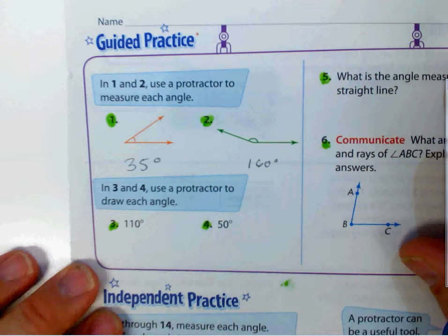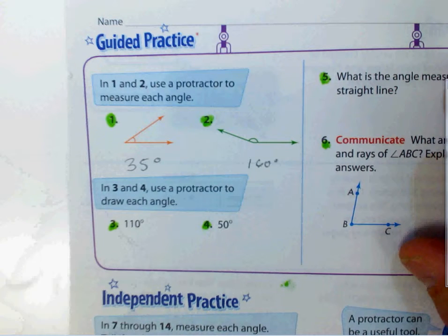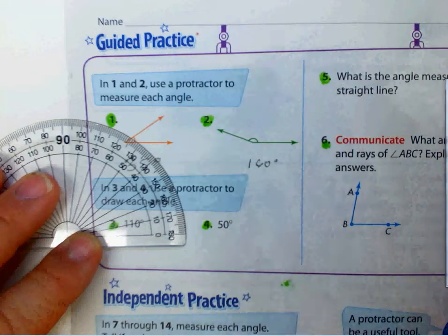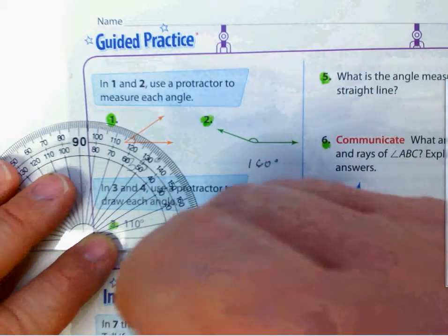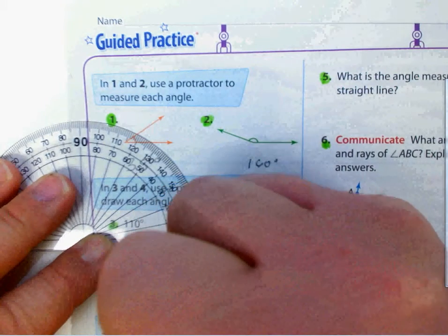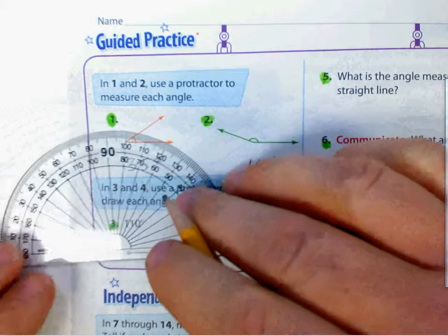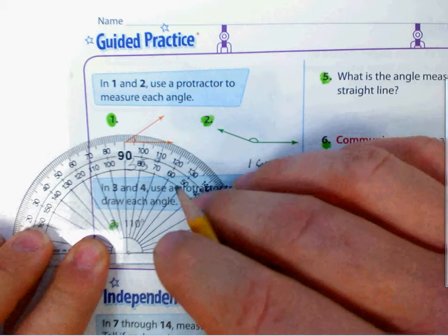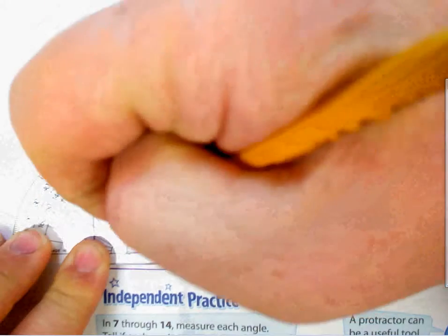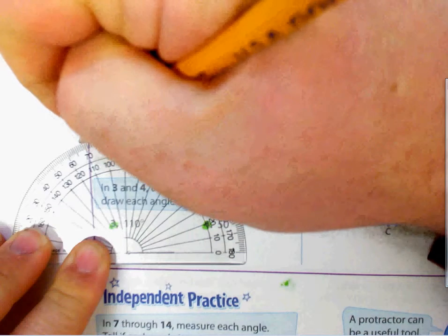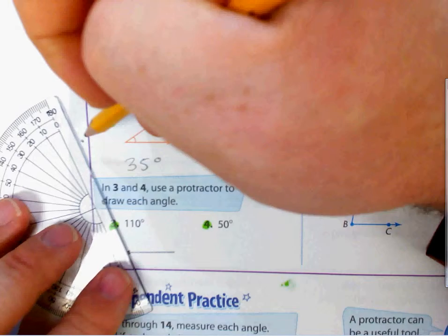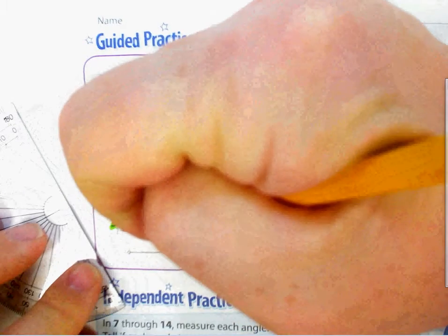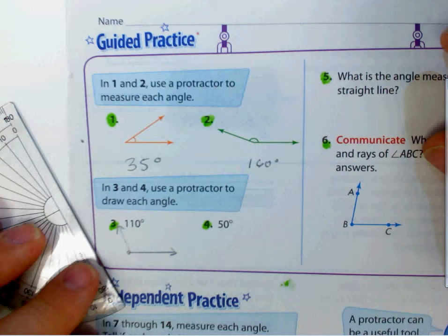In three and four, use a protractor to draw each angle. The first thing I'm going to do for 110 degrees is draw my ray right there. It's going to be on my vertex, and I'm going to put this on here at 110 degrees. I can see my 110 degrees is coming across right here, right across to the 70. I'm going to put a line right here, line up my protractor with the two dots, and draw my line up. That's going to be my 110 degree angle.